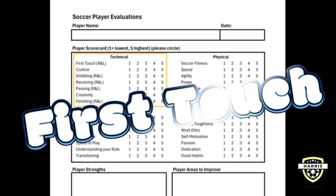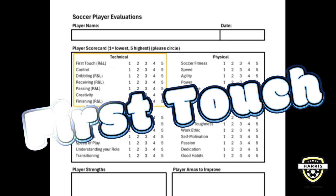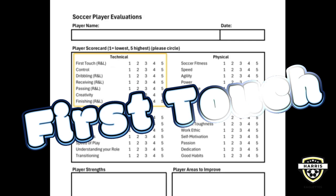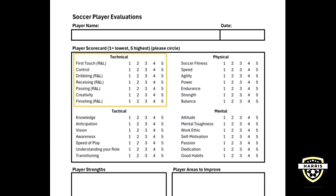The first skill is first touch with your right and left foot. First touch is how you control the ball the moment it comes to you. A good first touch allows you to settle the ball and set up your next move, whether it's dribbling, passing, or shooting. Practicing your first touch really helps with possession and makes it easier to work on your next play.